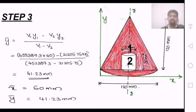y-bar equals v1 y1 minus v2 y2 divided by v1 minus v2, because we exclude the hollow cylinder. This gives the answer 41.23 mm. Then x-bar equals 60 mm and y-bar equals 41.23 mm.